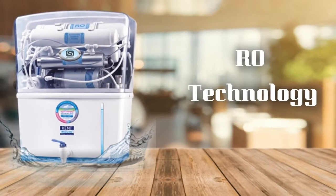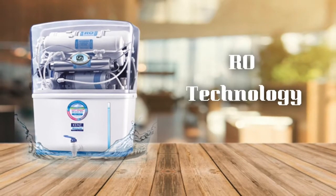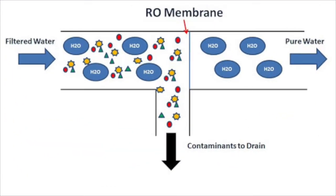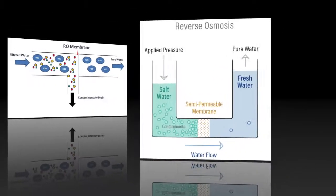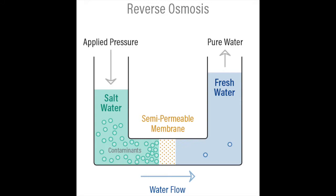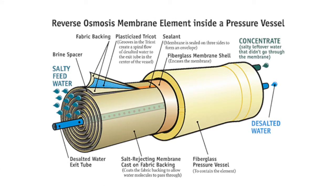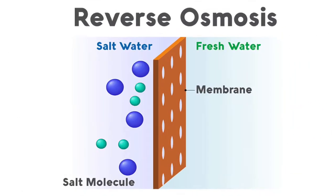First is RO technology. RO is an acronym for reverse osmosis, and this technology is used to remove all the dissolved impurities from water like chemicals, heavy metals, and dissolved salts. The water is passed through a semi-permeable membrane to remove all the impurities present in water. The pore size, approximately 0.0005 microns, of the RO membrane is very tiny — it allows only a molecule of water to pass through it, and other contaminants are rejected.